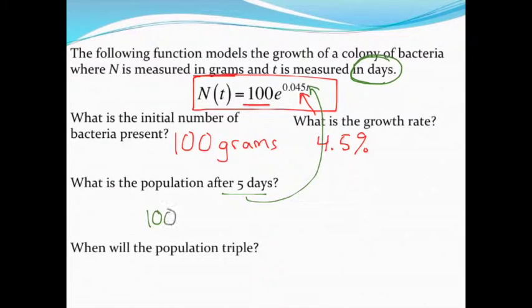100 times E raised to the 0.045 times 5. Using a calculator and making sure that I get all of this in the exponent, I come up with a population after five days of approximately 125.23 grams. It's okay to use a decimal in this case, because my population is being measured as a weight, so it would make sense to round it to a few decimal places.